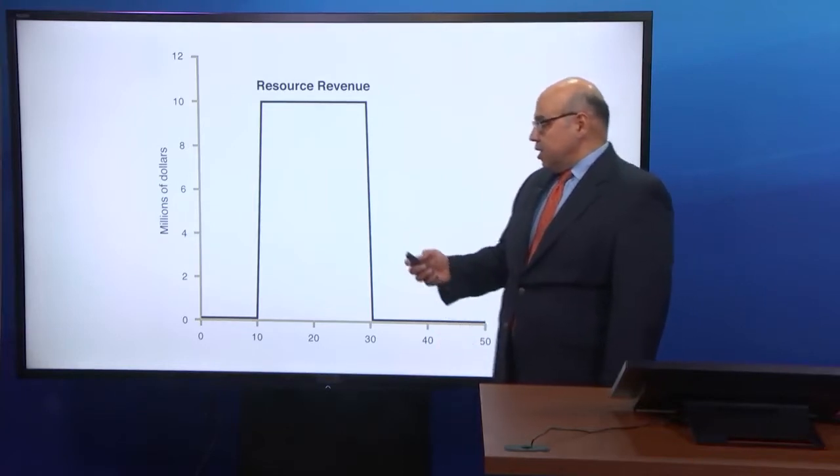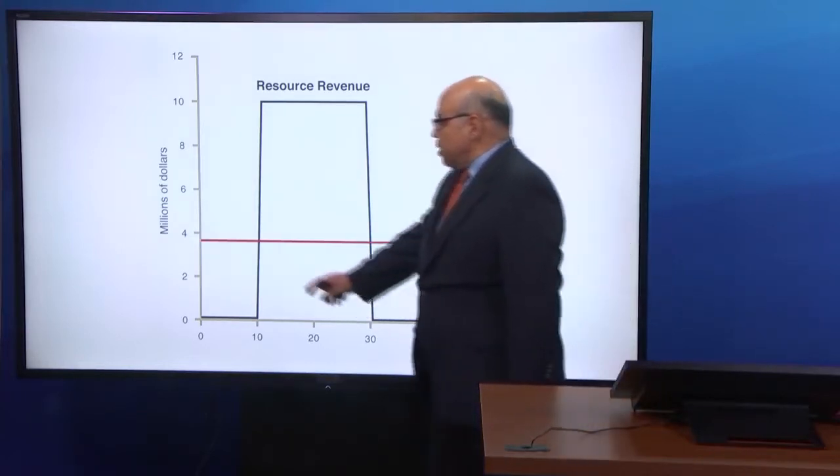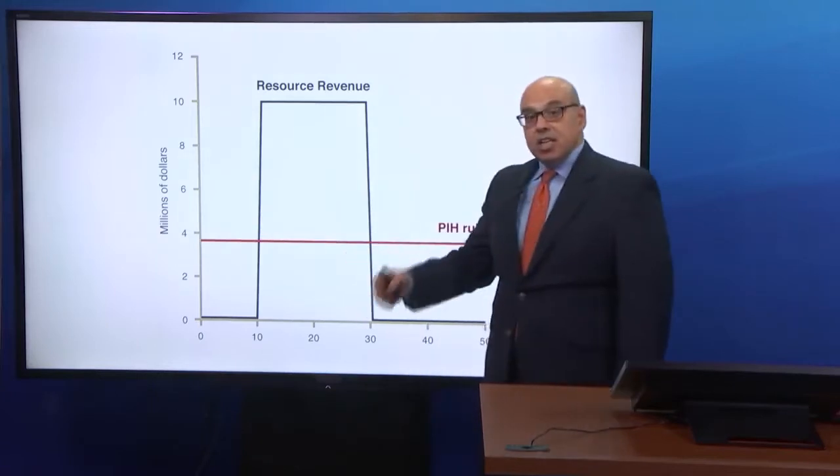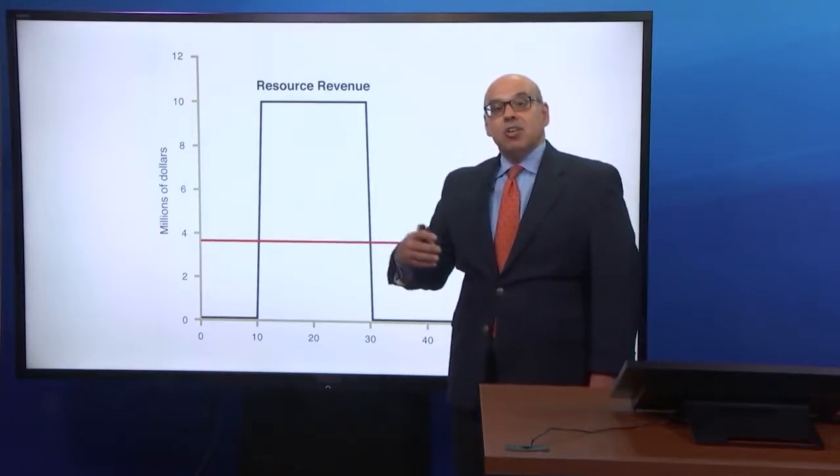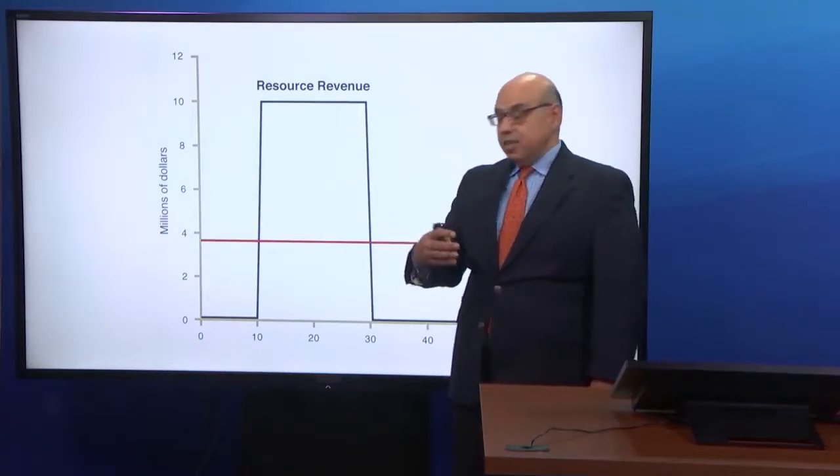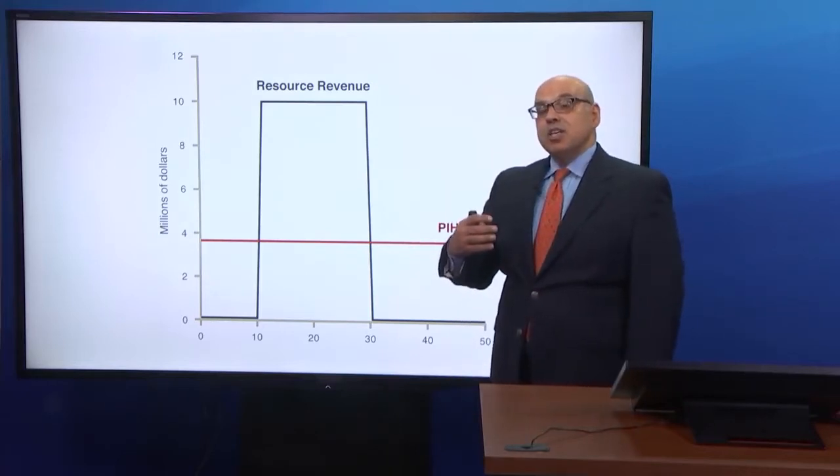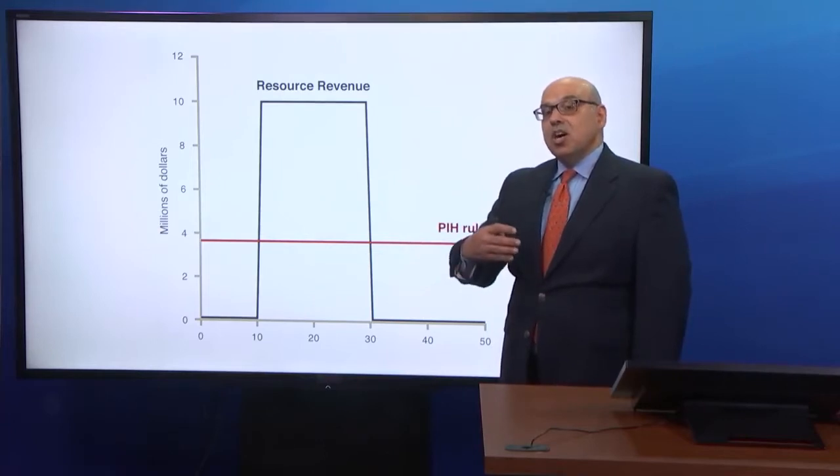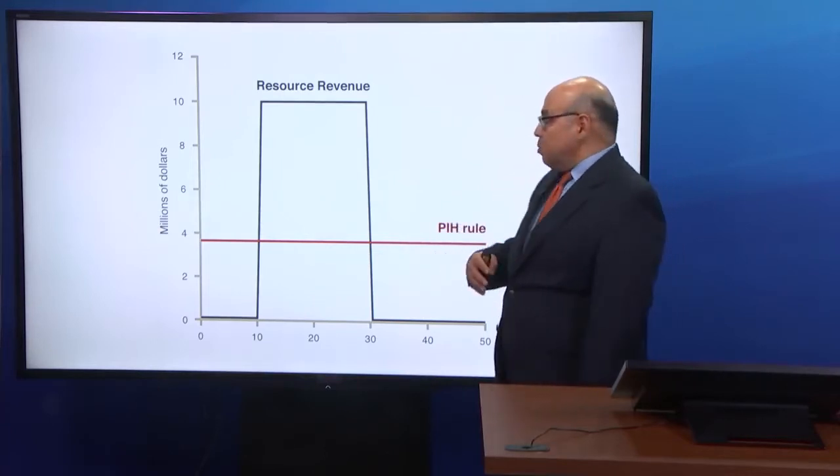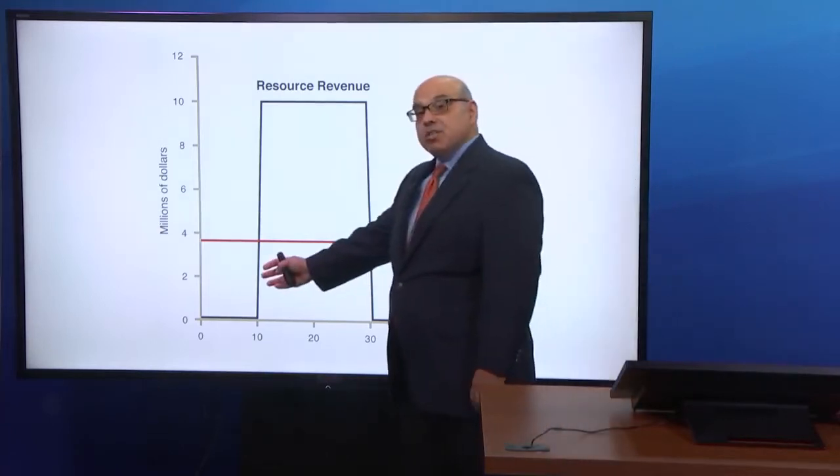The answer is on the next chart. The permanent income hypothesis, as we said, is a return on the present value of future resource revenue. So that implies the government has to pay itself the implicit return on all the wealth. But at present, it doesn't have any resource wealth.